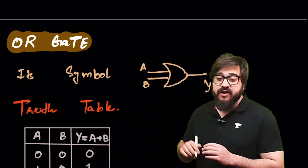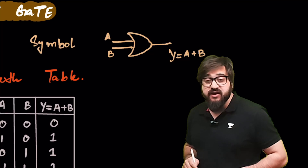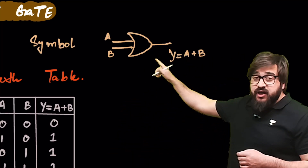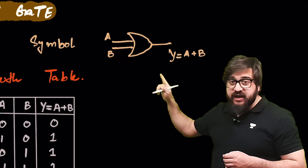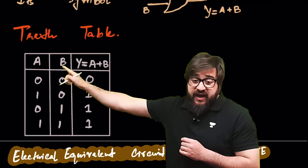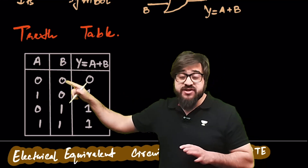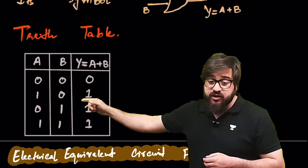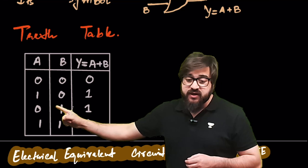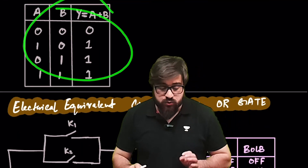Now the OR gate. The symbol of the OR gate is a curved shape. The work of the OR gate is to do addition: if inputs are A and B, the output is Y = A + B. Truth table: 0+0=0, 0+1=1, 1+0=1, 1+1=1.